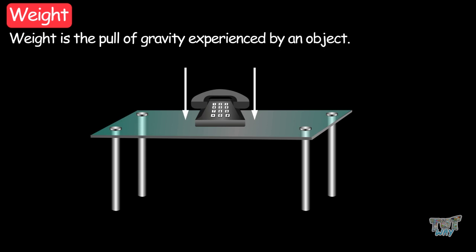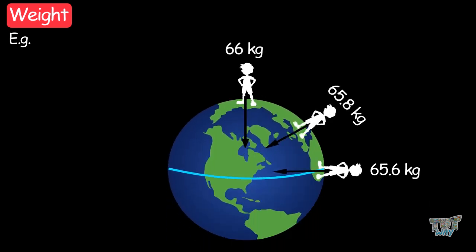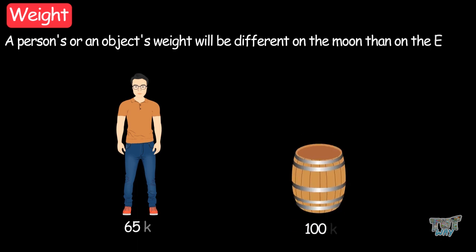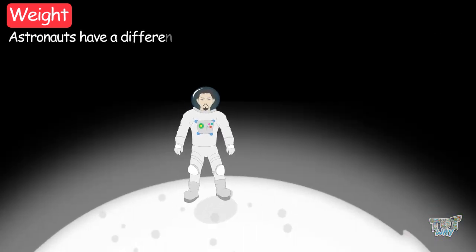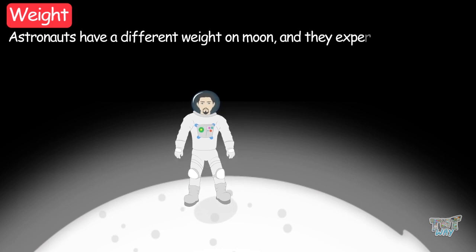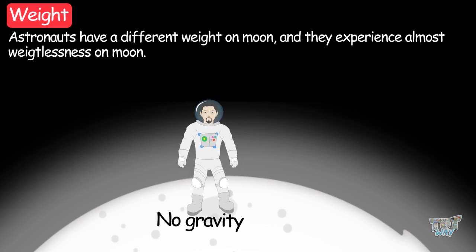Weight is the pull of gravity experienced by an object. For example, a person will experience a different pull of gravity on the poles than on the equator. So a person's weight will be different on the poles of the earth than on the equator. Also, a person or an object's weight will be different on the moon than on the earth. This is why astronauts experience almost weightlessness on the moon, because there is very little gravity.